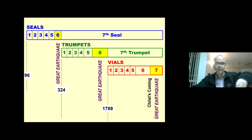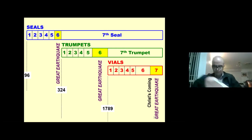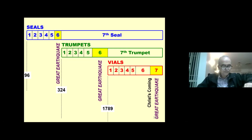And I looked when he opened the sixth seal, and behold there was a great earthquake. The sun became black as sackcloth of hair, and the moon became like blood. The stars of heaven fell to the earth as a fig tree drops its late figs when shaken by a mighty wind. The sky receded as a scroll when it is rolled up, and every mountain and island was moved out of its place. The kings of the earth, great men, rich men, commanders, mighty men, every slave and every free man hid themselves in the caves and in the rocks of the mountains and said, 'Fall on us and hide us from the face of him who sits on the throne and from the wrath of the Lamb, for the great day of his wrath has come and who is able to stand?'